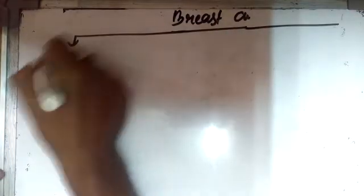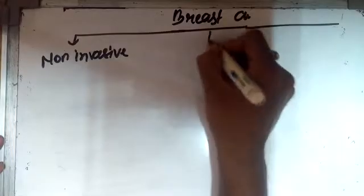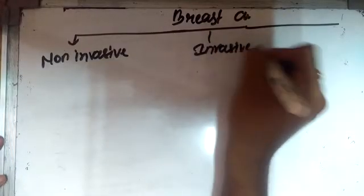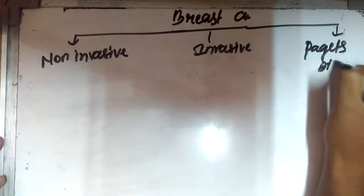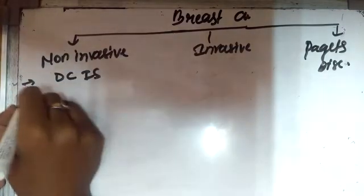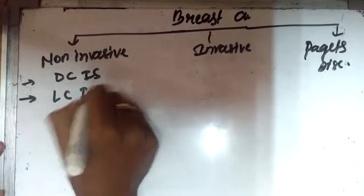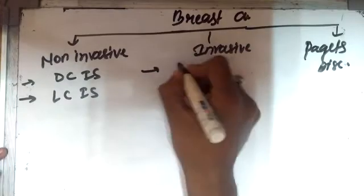Hello friends, my name is Ashish and today we'll be talking about breast cancer. Breast cancer is divided into basically three types: non-invasive, invasive, and Paget's disease. In non-invasive type we have ductal carcinoma in situ, also called intraductal carcinoma, and lobular carcinoma in situ, LCIS.